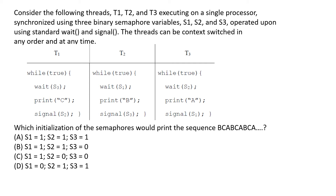This is an operating systems question based upon process synchronization. We have been given three threads, or processes, T1, T2, and T3, which are executing on a single processor. They are synchronized using three binary semaphores S1, S2, and S3 respectively, and can be acted upon using the standard wait or signal (P and V) operations. They can be context switched at any point of time.